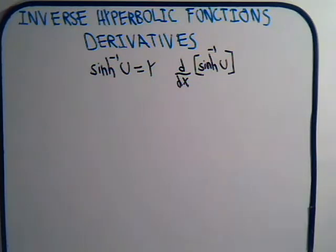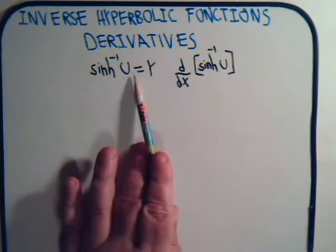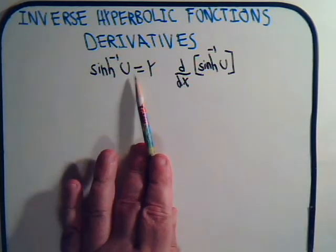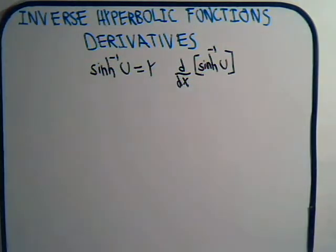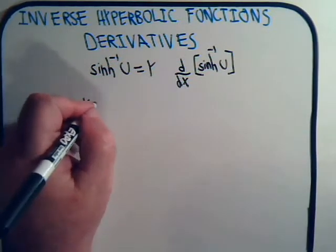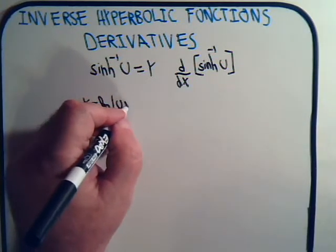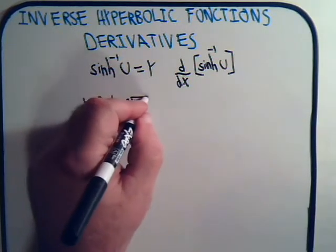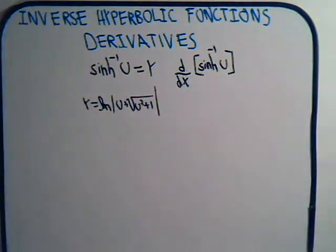Now, this is where we need to remember some information from previous videos. If we say, for example, the inverse hyperbolic sine of u, we call that y. Remember now there is a logarithmic expression for this. And that is, y would be equal to the natural log of u plus square root of u squared plus 1.